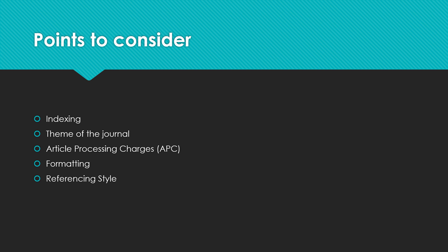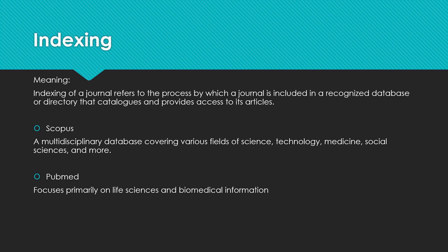When we are trying to communicate our manuscript for publication, the points to consider are: indexing, theme of the journal, article processing charges, and formatting and referencing style. The first point is indexing. Indexing of a journal refers to the process by which a journal is included in a recognized database or directory that catalogues and provides access to its articles. Some widely known indexings are Scopus, PubMed, and ABDC.